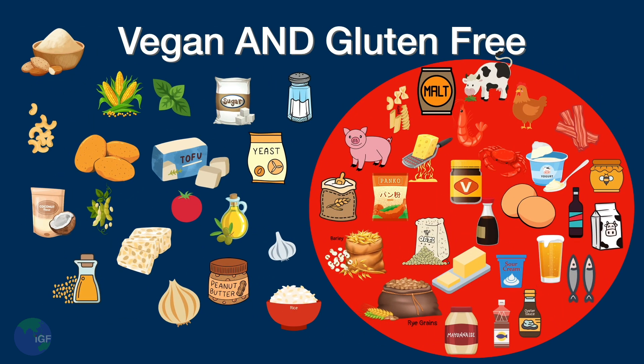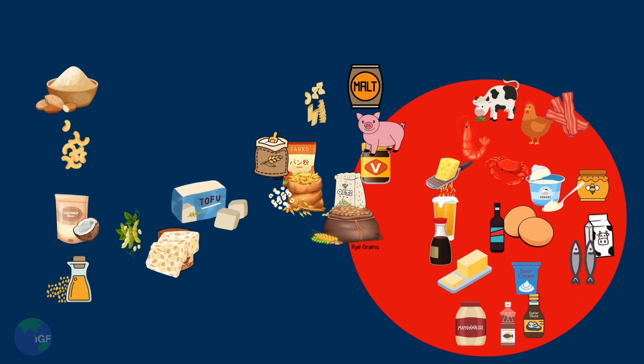Finally, gluten-free and vegan is one of the most limiting diets. Plant-based foods that are popular in vegan dishes often contain gluten as an ingredient. When gluten is removed from the diet as well, there are fewer ingredients to choose from.